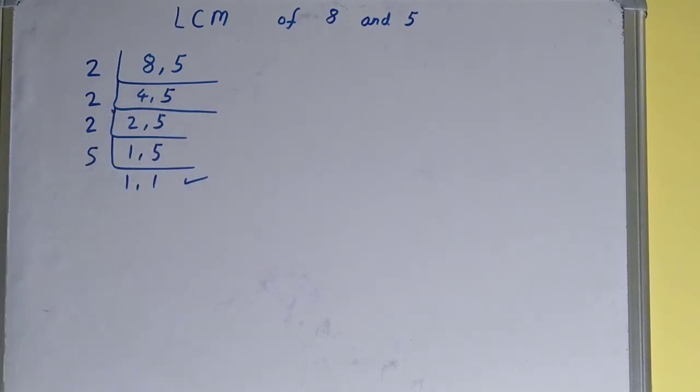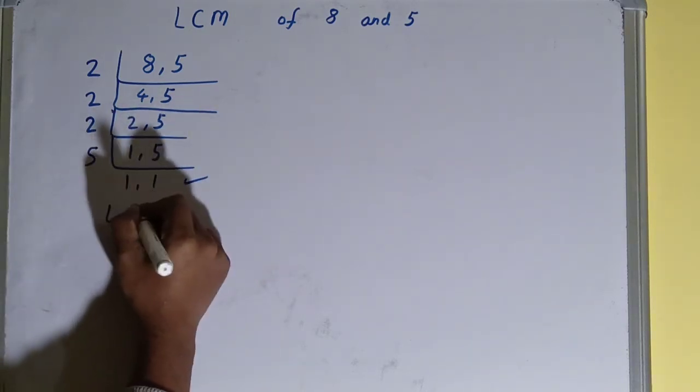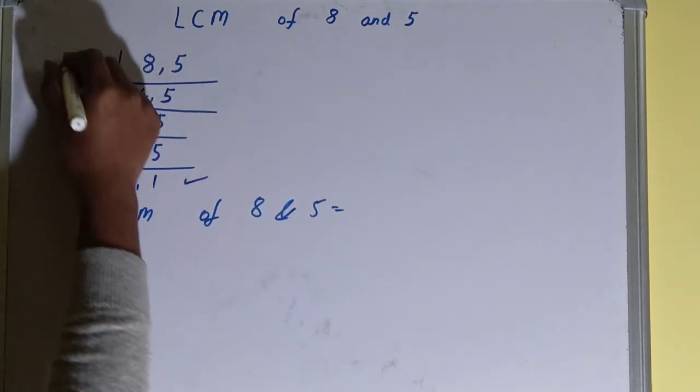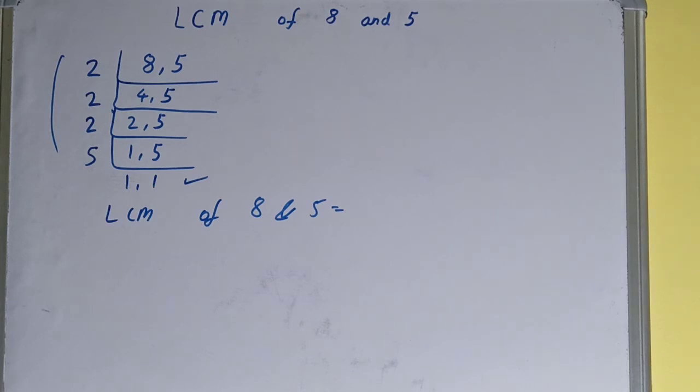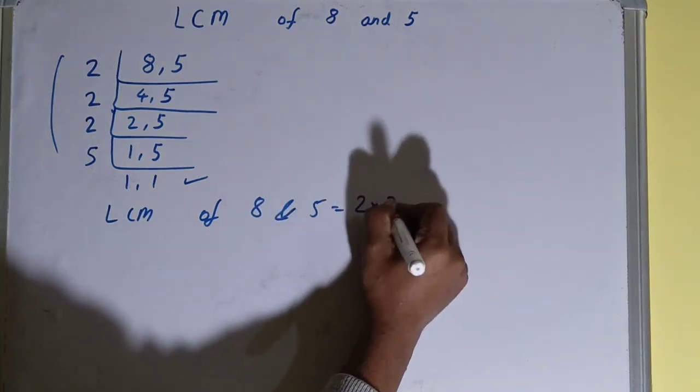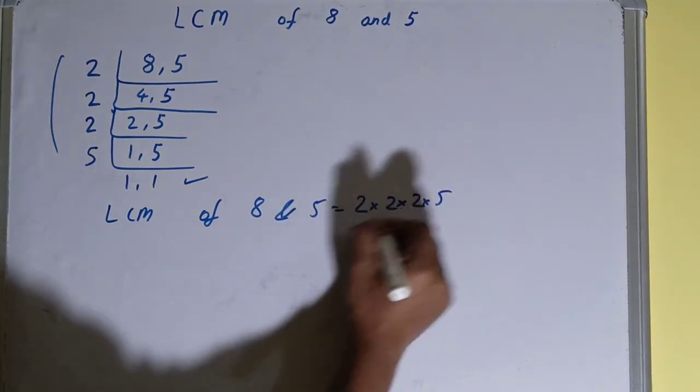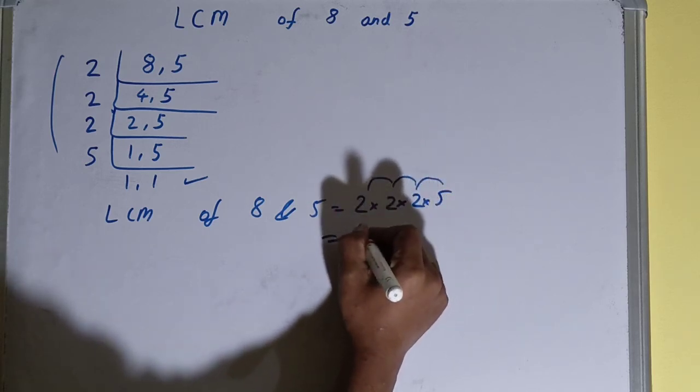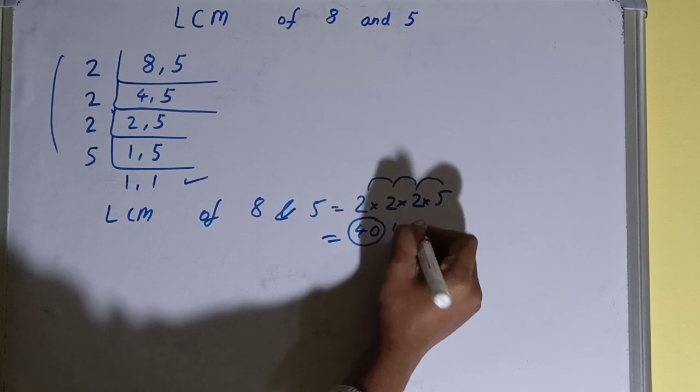That is, LCM of 8 and 5 equals multiply whatever you have on the left-hand side: that is 2 times 2 times 2 times 5. Your answer will be 5 to 10 to 20 to 40. The answer will be 40, or your LCM will be 40.